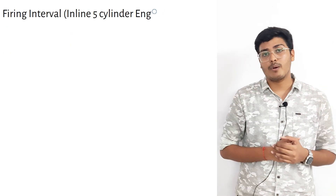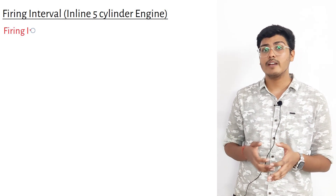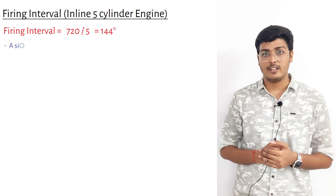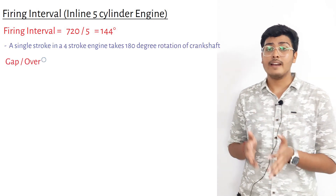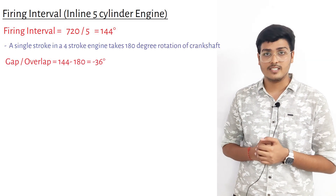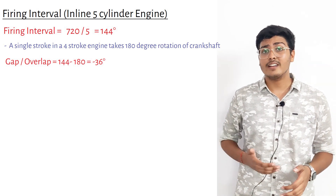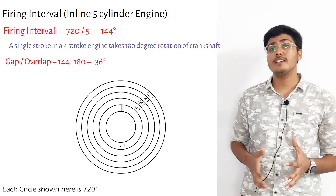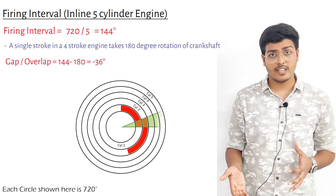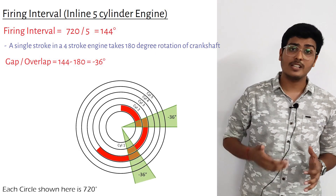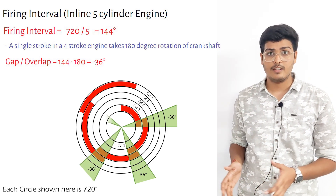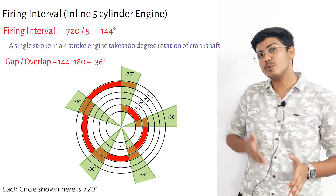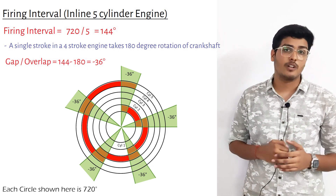For an inline five-cylinder engine, the firing interval is 720 ÷ 5 = 144°. Now 144° − 180° = −36°. The negative sign indicates there is an overlap of power strokes of 36°, meaning we are continuously getting power with no gap between power delivery. This makes the inline five-cylinder smoother compared to the inline three-cylinder engine in terms of firing interval.